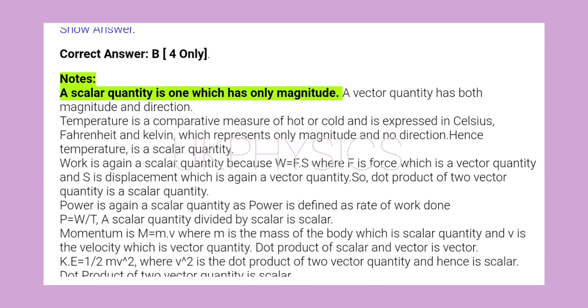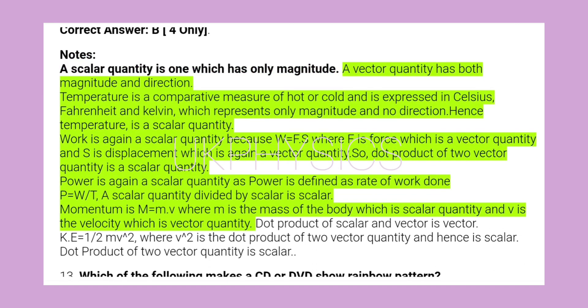Notes: A scalar quantity is one which has only magnitude. A vector quantity has both magnitude and direction. Temperature is a comparative measure of hot or cold and is expressed in Celsius, Fahrenheit and Kelvin, which represents only magnitude and no direction. Hence temperature is a scalar quantity.